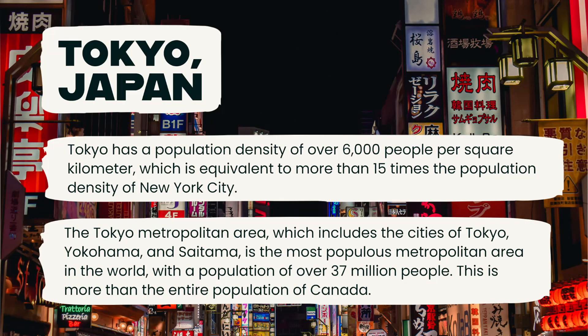Japan is one of the most densely populated countries in the world. A fun fact about population density in Japan is that the city of Tokyo has a population density of over 6,000 people per square kilometer, which is equivalent to more than 15 times the population density of New York City. This means each person would have less than 3 square meters of space to themselves.